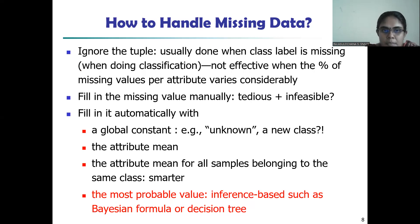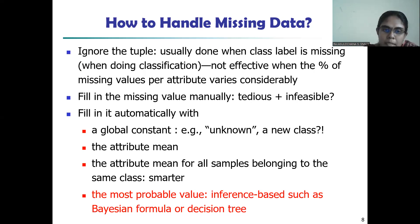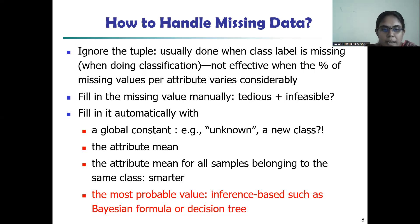Or we may fill in the missing value manually — though it is a tedious process, if the number of missing attributes is very minimal we can fill them in manually. Or we can automatically fill with a global constant. We can also fill it with the attribute mean — for example, in the case of customer salary, if the salary of one particular person is missing, we can fill it with the attribute mean. Or we can fill it with the most probable value, which can be calculated using decision tree induction or the Bayesian formula.